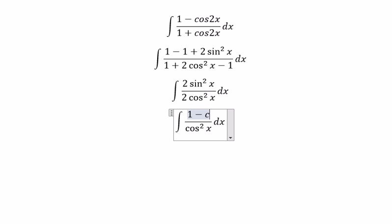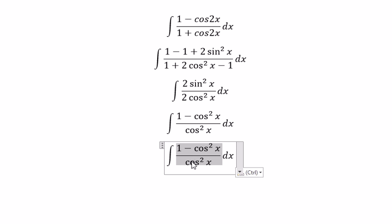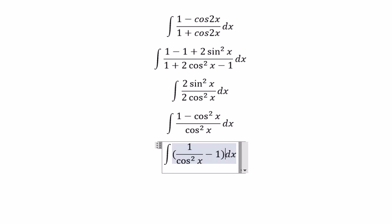sin²x we can change to 1 minus cos²x. And we got about 1 over cos²x and minus number 1.